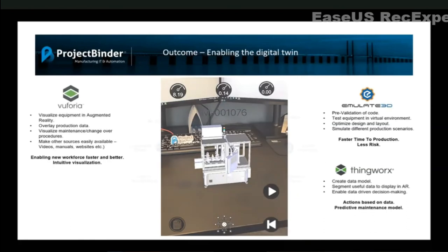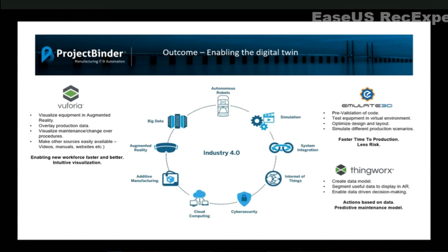Really what we've done is taken the digital thread and conveyed Industry 4.0 through this. We start with Emulate 3D to commission and validate our machinery, then we use the innovation suite — ThingWorx and Vuforia. ThingWorx we use to take the data and make better decisions quicker, including predictive maintenance models so decisions are being made from the equipment itself. Vuforia we use to visualize this equipment in a new and very intuitive way, especially for a younger workforce used to this kind of technology. That was our example of how to enable Industry 4.0 and see the digital thread from start to finish on a production line in a real life case.